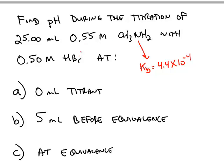Here's the titration curve where we're titrating 25 mL of a weak base and we have the Kb value. We're titrating that with hydrobromic acid, so we have a weak base and a strong acid.